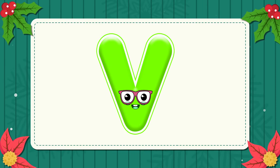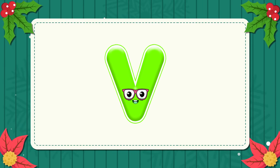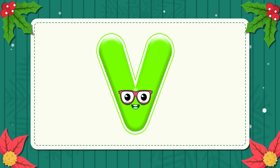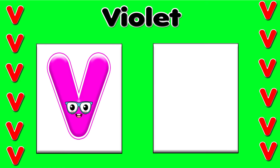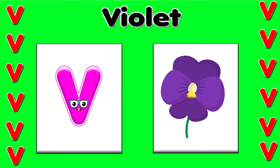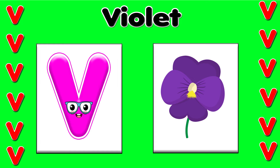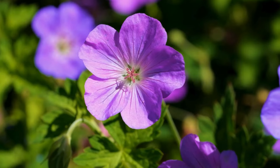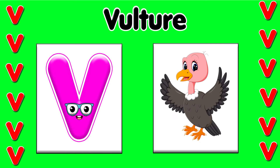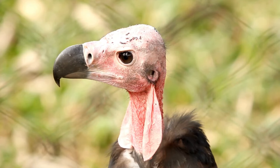V. This is the letter V. V is for violet — v, v, violet. V is for vulture — v, v, v.